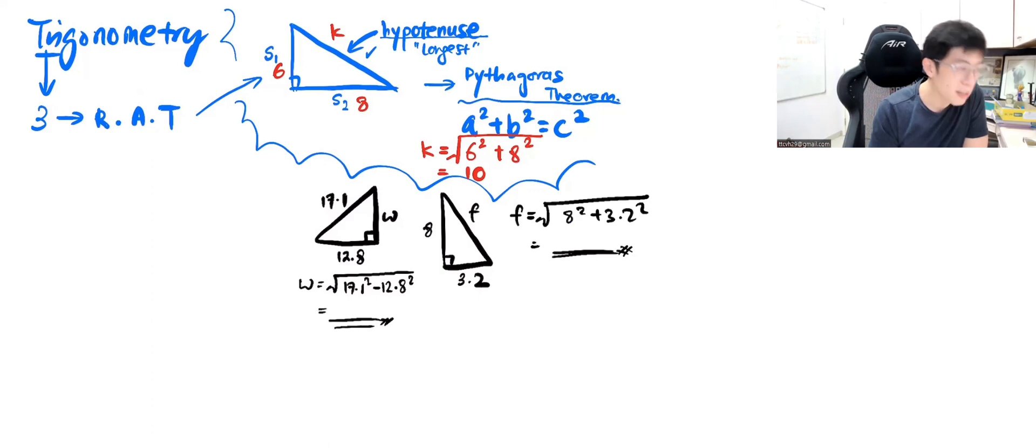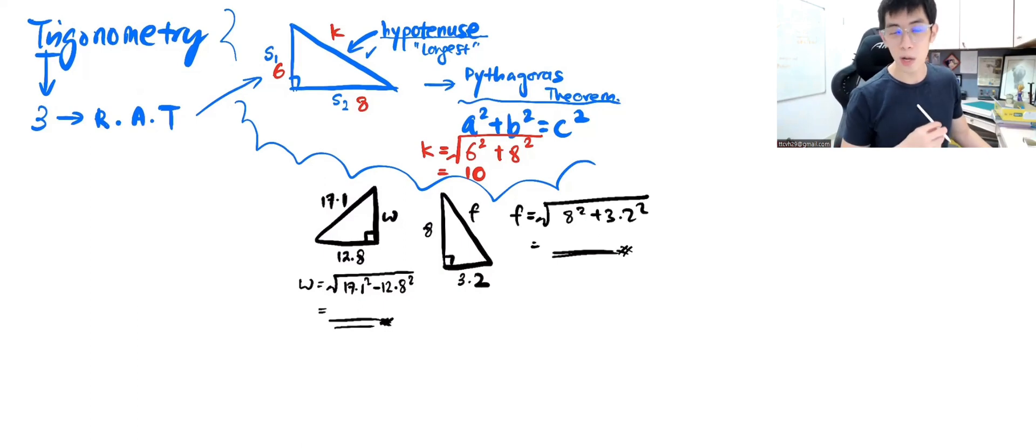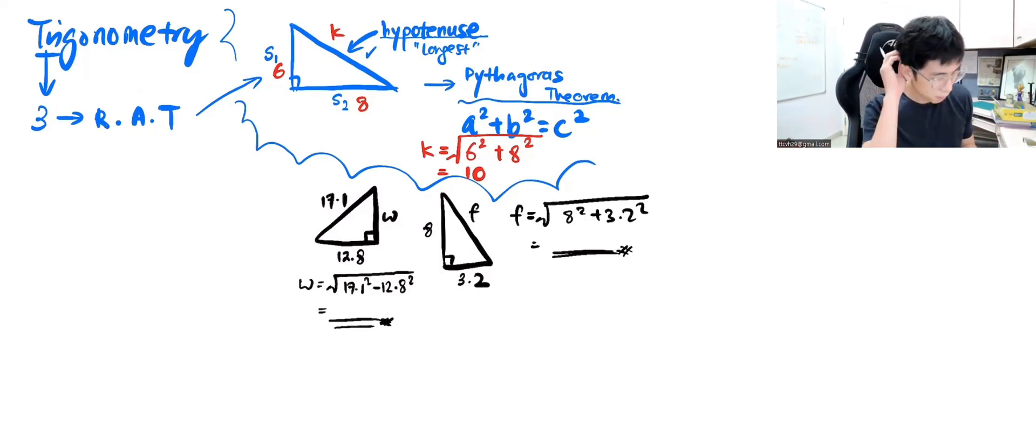Now what you're going to do is insert into your calculator. Get me the two answers. I will get my answer as well. We will compare and see whether we get the same answer or not. Form 1 version. So √(17.1² - 12.8²). I will put two decimal points. Remember to round off if you need two decimal points. You can write more if you want.